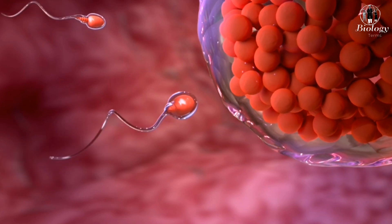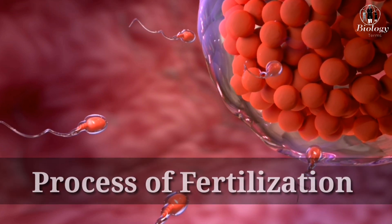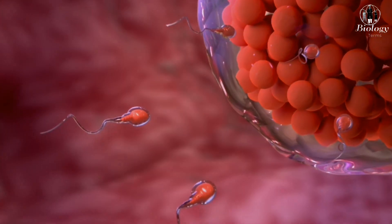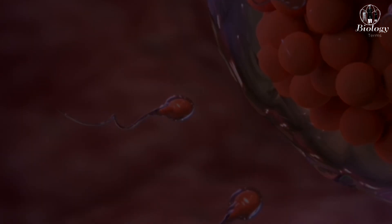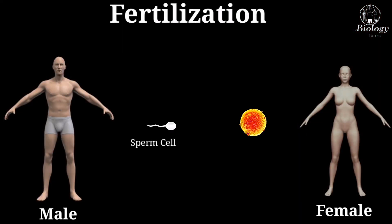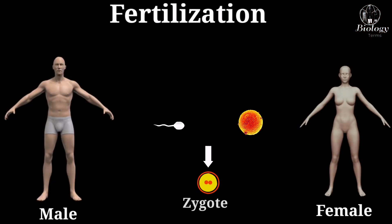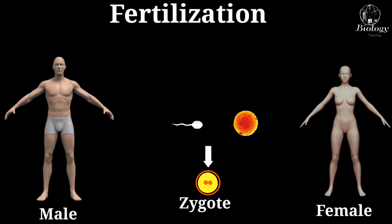Hello and welcome to our video on the process of fertilization. Fertilization is the process by which a sperm cell from a male and an egg cell from a female combine to form a zygote, which is the first stage of a new individual.